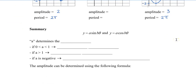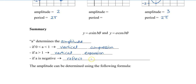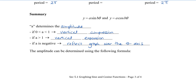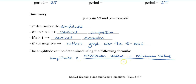To summarize amplitude: the value a determines the amplitude. If a is between 0 and 1, we get a vertical compression; if a is greater than 1, we get a vertical expansion. If a is negative, the graph reflects over the theta axis, which will appear quite often. The amplitude can also be calculated as: (maximum value minus minimum value) divided by 2.